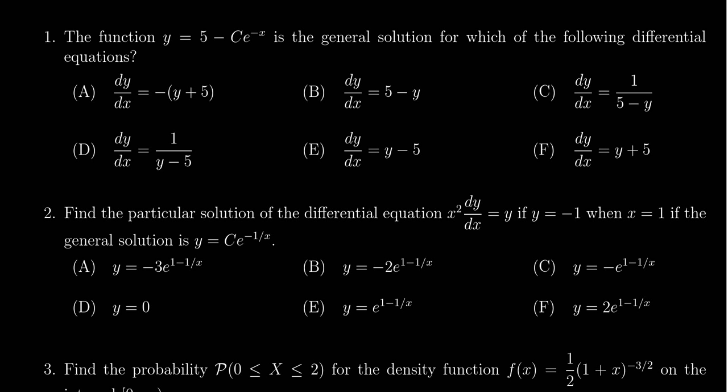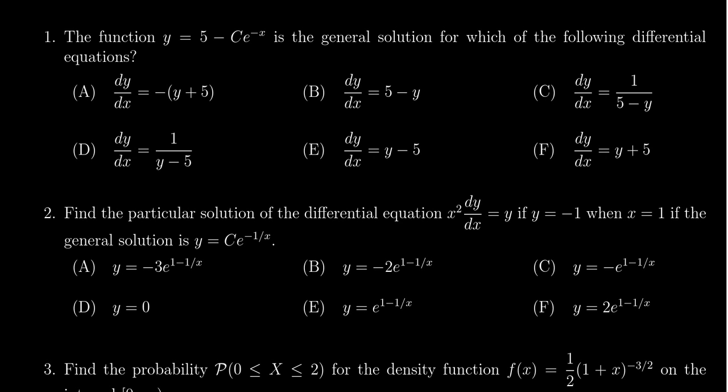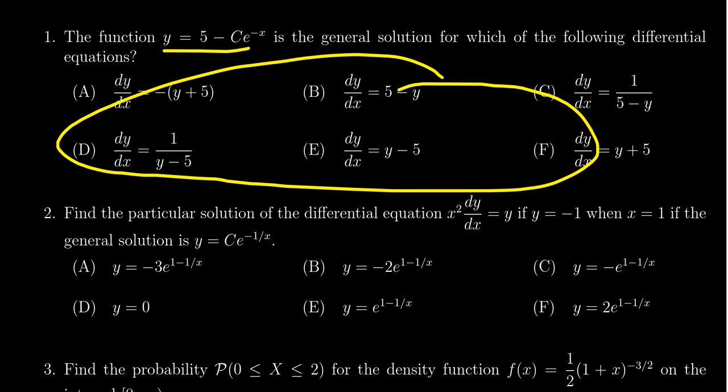In this video, we provide the solution to question number one for practice exam number three for Math 1220. We're given a function y equals 5 minus C e to the negative x, and we're supposed to determine which of the following six differential equations is this the solution of.